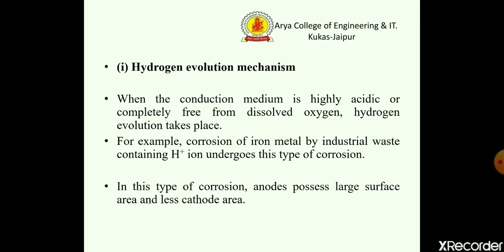The first is the hydrogen evolution mechanism. When the conducting medium is highly acidic or completely free from dissolved oxygen, hydrogen evolution will take place. For example, corrosion of iron metal by industrial waste containing hydrogen ions undergoes this type of corrosion. In this type of corrosion, the anode has a large surface area and a smaller cathodic area.